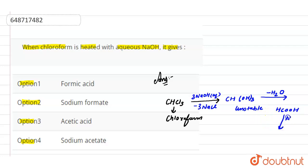HCOONa. This product is known as sodium formate. So when chloroform is heated with aqueous NaOH, it gives sodium formate. We have option 2, so option 2 will be the correct answer for this question.